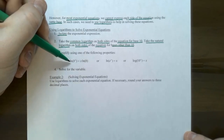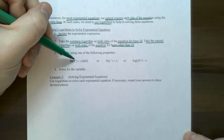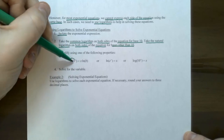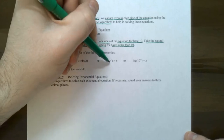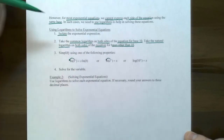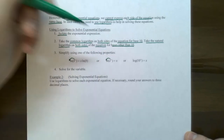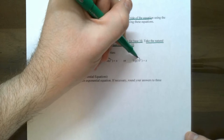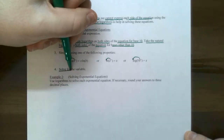For the three cases: if the base is not e or 10, take the natural log and use the power law to bring x down as a coefficient, giving x times natural log of b. If the base is e and you take the natural log, the power law gives x times natural log of e, and since natural log of e equals one, you're left with just x. If the base is 10 and you take the common logarithm, similarly log base 10 of 10 is one, leaving just x. If x is not yet isolated after step three, solve for the variable.